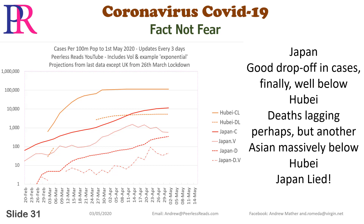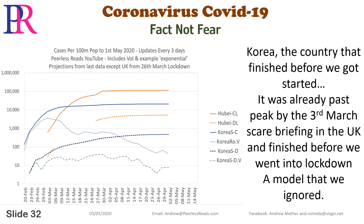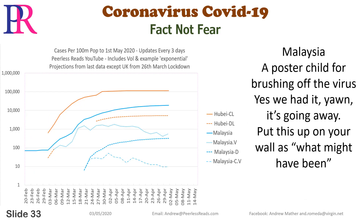Japan lied. Korea: the country that finished before we got started. It was already past peak by the 3rd of March — during the scare briefing in the UK — and finished before we went into lockdown. A model that we ignored. Malaysia: a poster child for brushing off the virus. Yes we had it — yawn — it's going away. Put this up on your wall as what might have been.